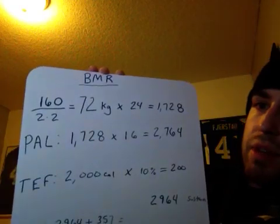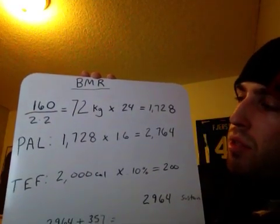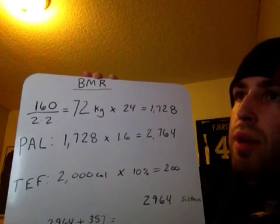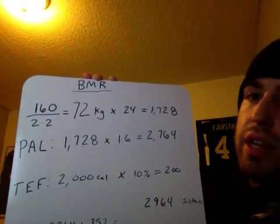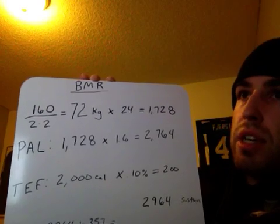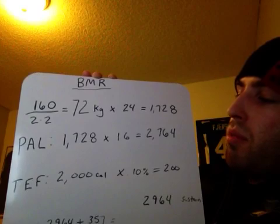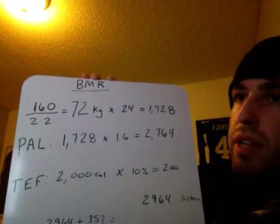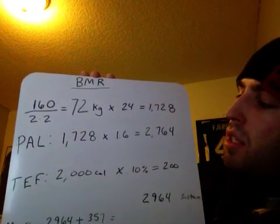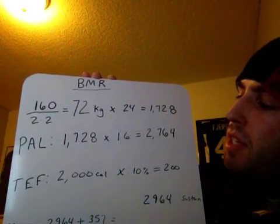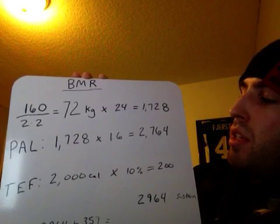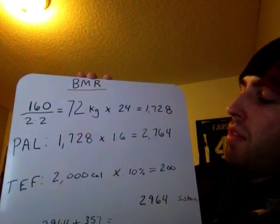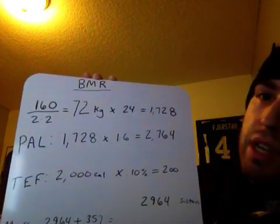Okay, next step, your PAL step or your physical activity level step. You take that number from up above. You times it by 1.0 is a sedentary person all the way up to a 2.0 which is basically a professional athlete, a Michael Phelps, someone that's working out all day every day is a 2.0. So I put Max at a 1.6 because he's working out about 6 days a week, lifting heavy and doing strenuous workouts. And you times that number from up above by the physical activity level and that's going to give you your calorie count to sustain that physical activity level for your weight. So 2,764 calories with his physical activity level.